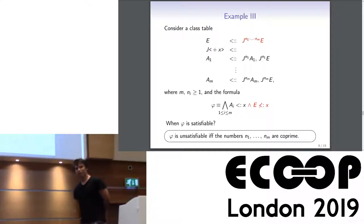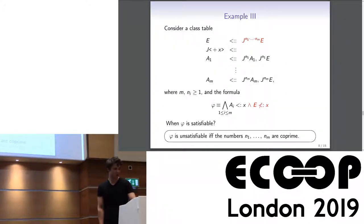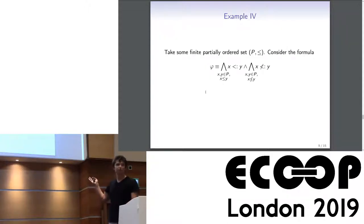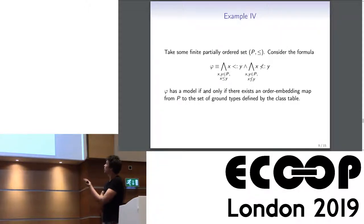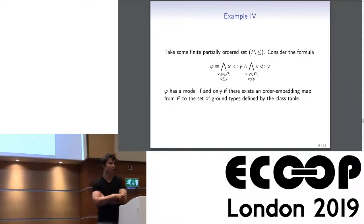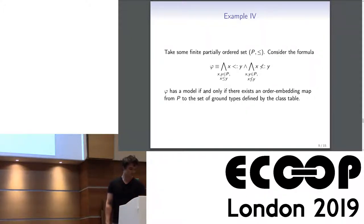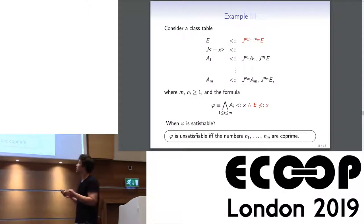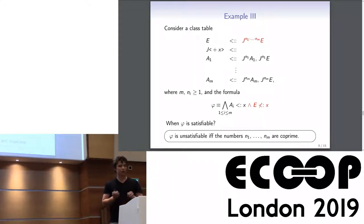We have managed to encode coprimeness into our subtype-set problem, which is already alarming. Even without type constructors, we can encode the existence of an order-embedding map from an arbitrary finite poset to a set of ground types determined by our class table — using a simple query with no type constructors at all. Importantly, all these class tables are non-expansive, so even with decidable ground subtyping, the subtype-set problem looks more complex.